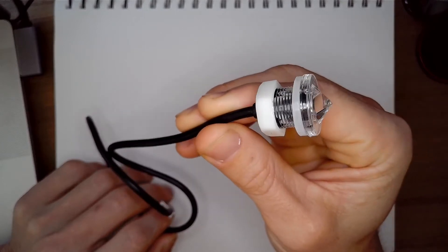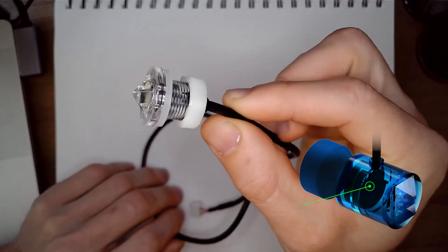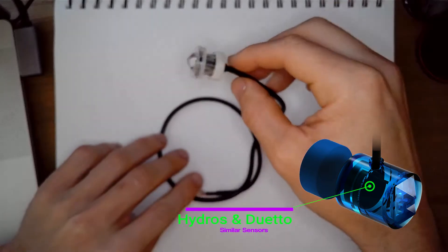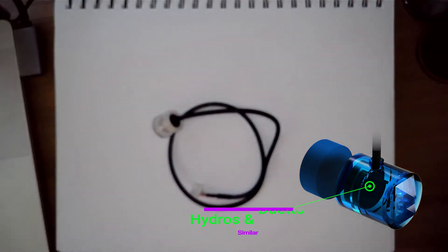My guess is that these are the exact same size, although the signal wire is coming out of the top of the Duetto, and on these sensors it's coming out of the back.